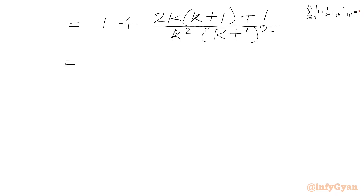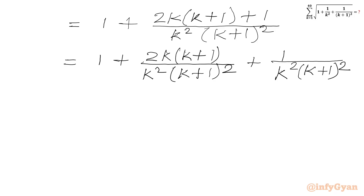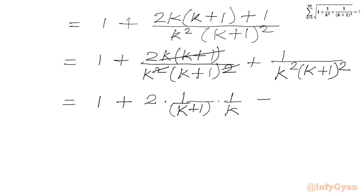Now we will distribute our numerator with respect to the denominator and write 2 times k times (k+1) over denominator k squared times (k+1) whole squared, then we have 1 in the numerator, so we will write 1 with denominator k squared times (k+1) whole squared. Now we will cancel k times (k+1) with this power 2. So we will write here 1 plus 2 times 1 over k times 1 over (k+1), plus 1 over k times (k+1), and then we will put whole power 2.